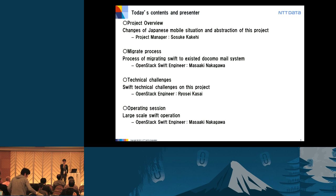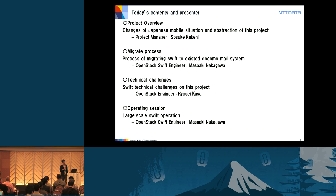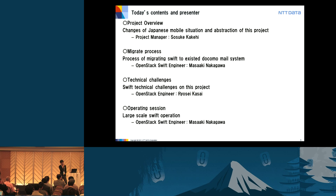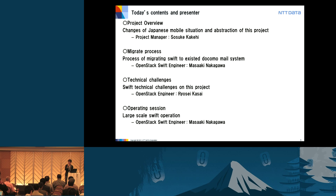This is the contents of the presentation. There are four things we'd like to cover today. Firstly, Mr. Kakehi will talk about Project Overview — the changes of the Japanese mobile station and an abstraction of this project. Secondly, I'll talk about the process of migration to the existing Docomo Mail System. Then Mr. Kasai will talk about Swift technical challenges. Finally, I'll talk about large-scale Swift operation. This presentation will take about 40 minutes, and we'll have a Q&A session at the end. If there is no time, please come to the NTT booth to discuss with us.